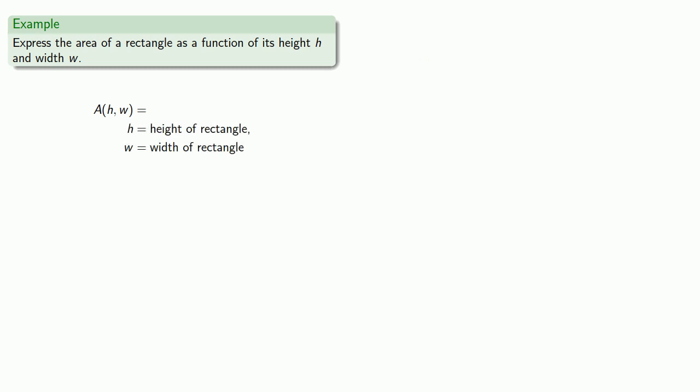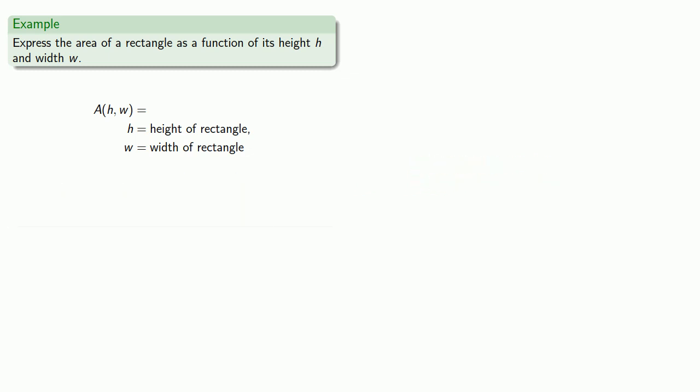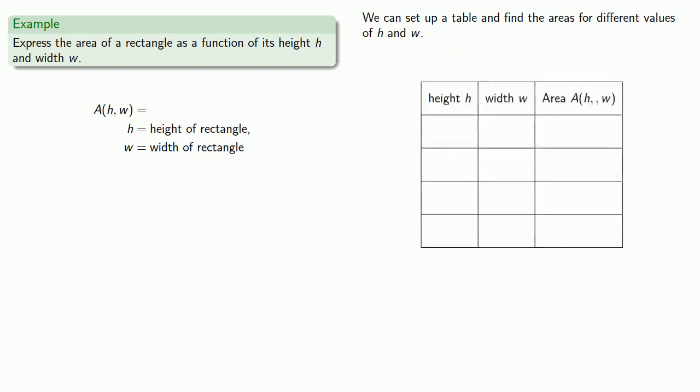So there's many things we could do at this point. The worst way to learn mathematics is to look for examples of solved problems. And in this case, the problem of finding the area of a rectangle as a function has already been solved. You can look up that area formula. But don't do it. One way we can try and figure out what that relationship is, is that we can set up a table and find the areas for different values of h and w. And here's a useful idea. It helps if you don't do the arithmetic.